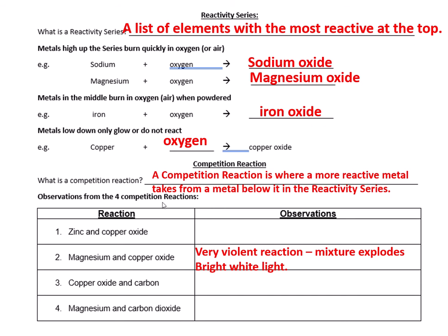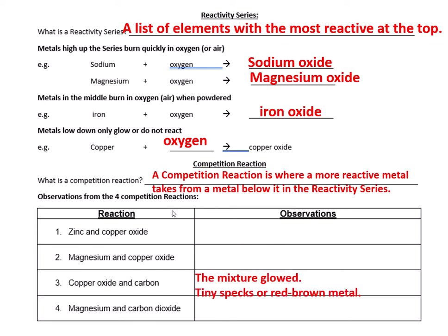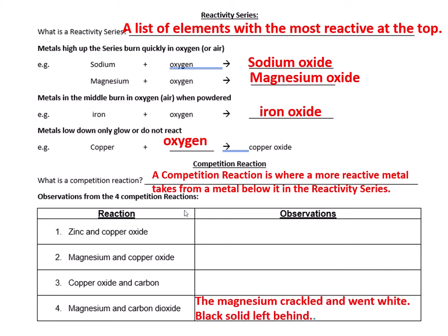Magnesium is so much more reactive than copper that mixing magnesium and copper oxide gives an explosive reaction — in the lab you stood well back, and in the video it was put in a fume cupboard. You got a bright white light. With carbon and copper oxide, demonstrated with the bottle top, heating the mixture makes it glow. Carbon steals the oxygen from the copper, giving you carbon dioxide and tiny black specks of copper metal left behind. With the large box of carbon dioxide, a roll of magnesium was placed inside — there was crackling, brilliant white light, and a black solid left at the end. That's magnesium stealing oxygen from the carbon dioxide, giving magnesium oxide (the white stuff) and carbon (the black stuff).